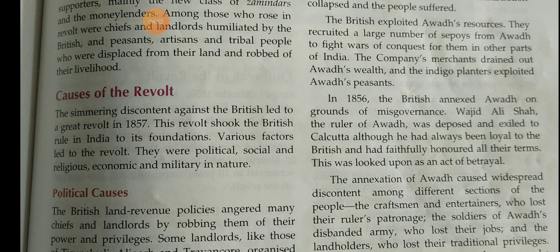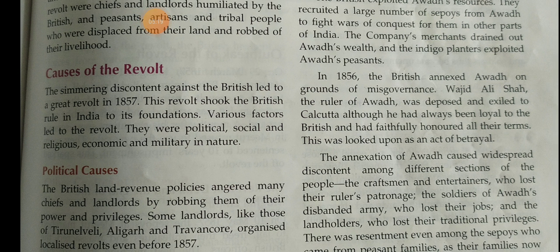The revolt of 1857 was called the Sipoy Mutiny. The revolt began with the mutiny of the Sipoys but soon transformed into a popular revolt when people from different sections of society spontaneously joined. The result of the revolt of 1857 was that it marked the end of the East India Company's rule in India, and the British Crown took over the administration of British Indian territories.